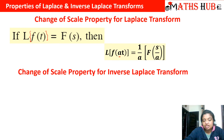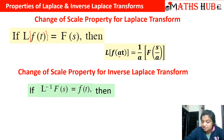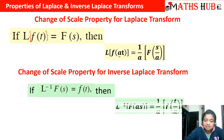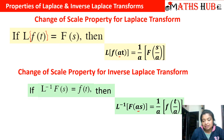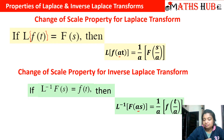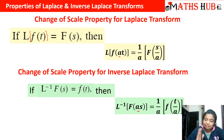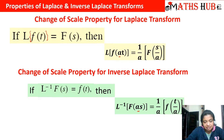Similarly for the change of scale property for inverse Laplace transform: if the inverse Laplace of F(s) is f(t), then the inverse Laplace of F(as) — meaning we are multiplying s by a — then on the right hand side in f(t) it will get divided by a. You need to recall that if we are multiplying with a on the left side, whether it is Laplace or inverse Laplace, on the right hand side it will get divided. And if on the left hand side we are dividing, then on the right hand side it will get multiplied.